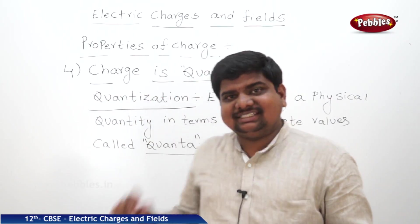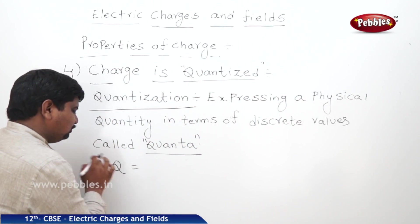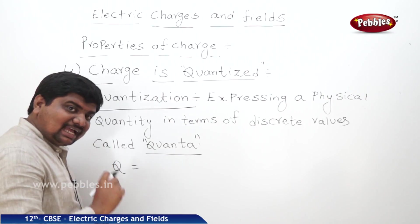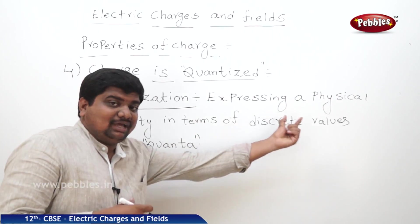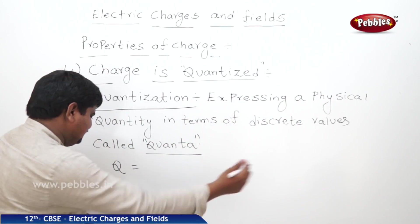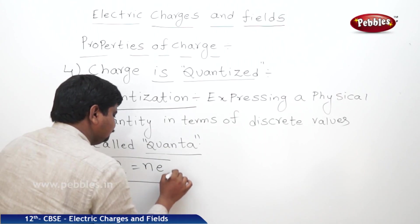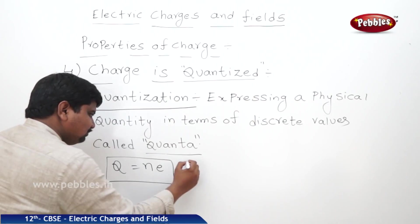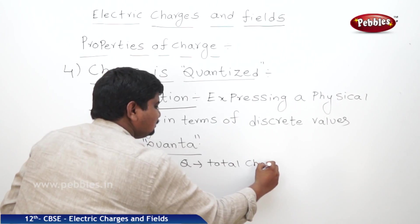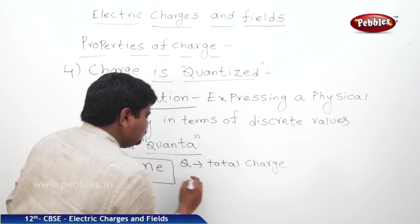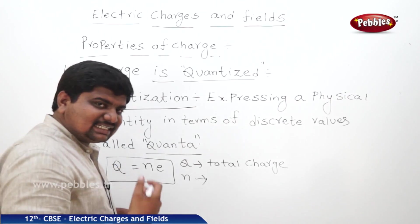Charge is quantized means the total charge of the substance, Q, can be expressed as integral multiples of a quanta — the discrete value of the charge. That means Q is equal to Ne. What is Q? Total charge. What is N? Number of charged particles exchanged.